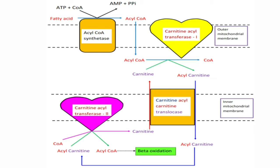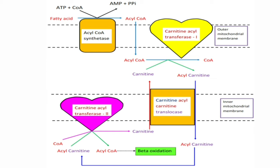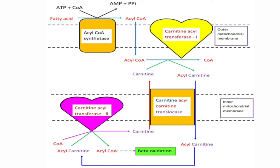The activated fatty acid can cross the outer mitochondrial membrane. The outer mitochondrial membrane is permeable to most molecules, whereas the inner mitochondrial membrane has selective permeability. Acyl CoA crosses into the intermembrane space — the space between the outer and inner mitochondrial membranes. There, acyl CoA is converted into acyl carnitine: the acyl part is transferred to carnitine to form acyl carnitine, because only this complex can cross the inner mitochondrial membrane.